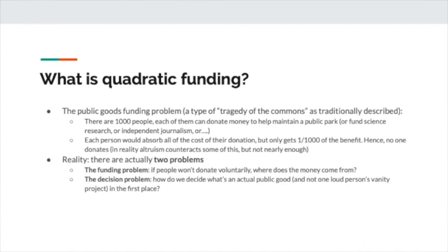Now, the more subtle reality is that there are actually two problems. The first problem is the funding problem — basically if people don't donate to this public good voluntarily. But there's also a second problem that people talk about less: the decision problem. How do we even know which public goods are worth funding in the first place? How do we decide what is an actual public good and not just one loud person's vanity project?